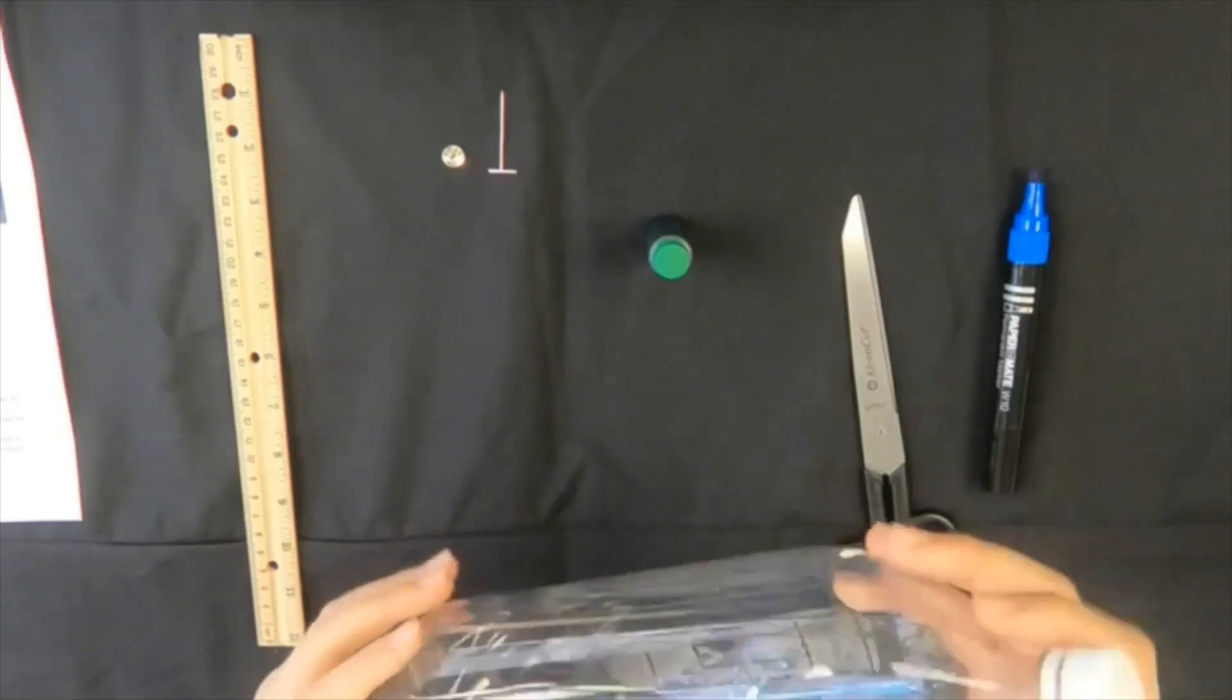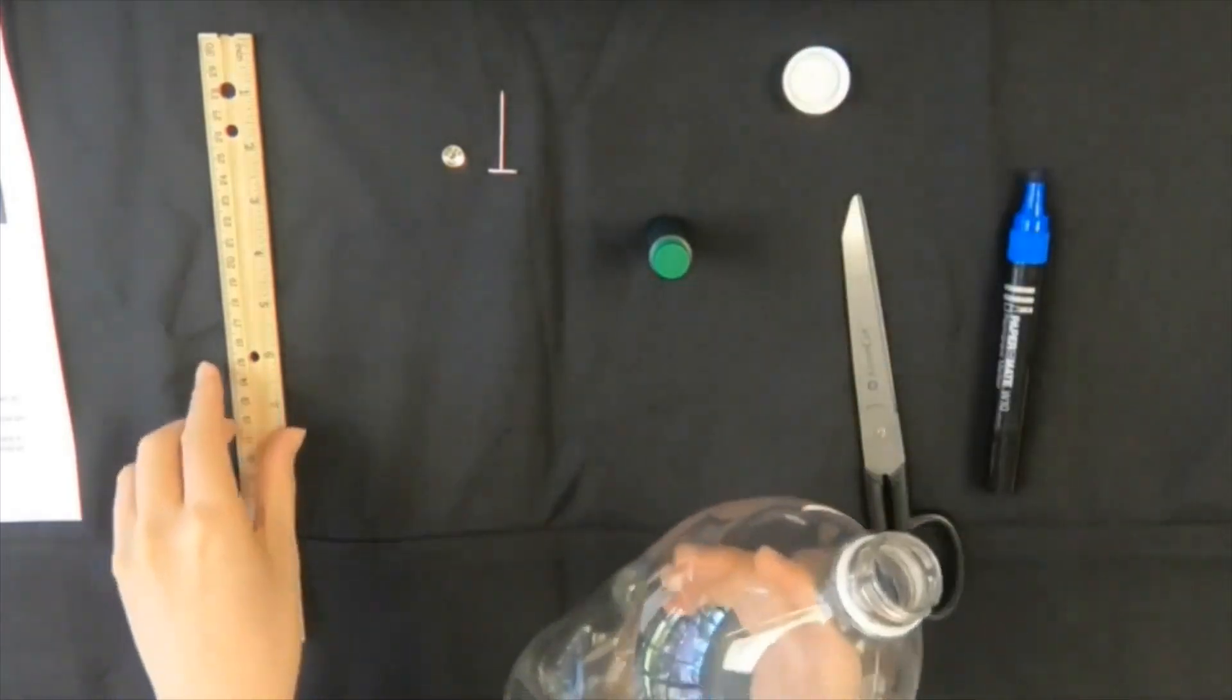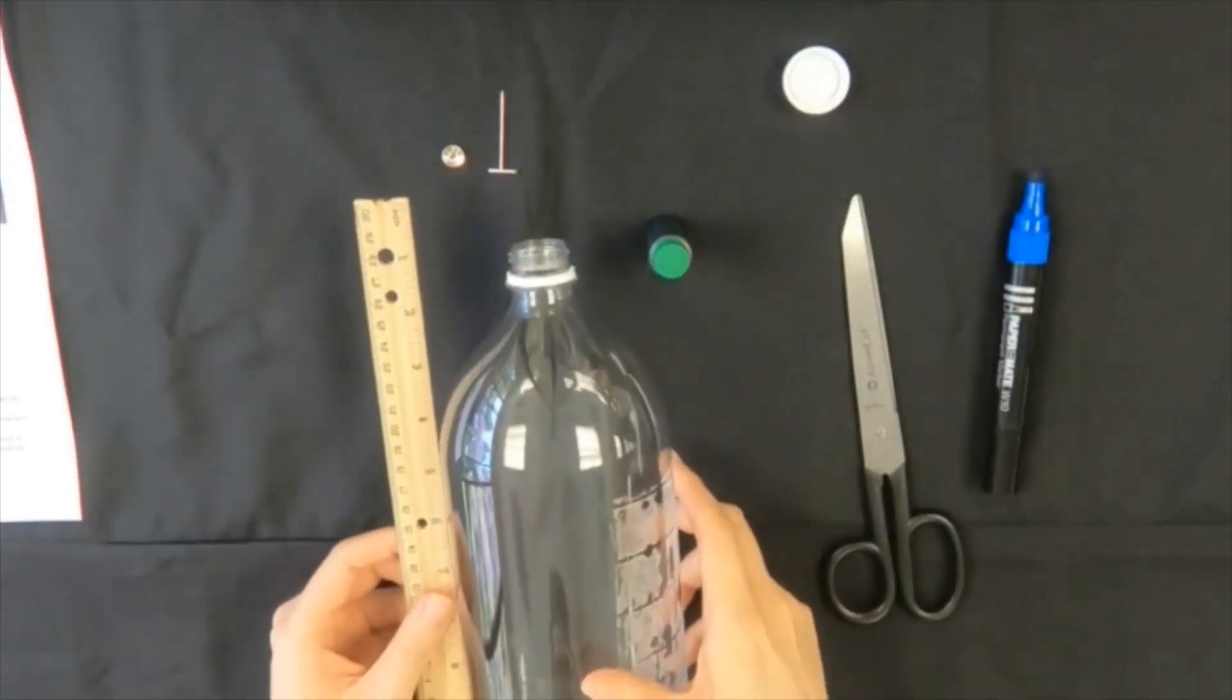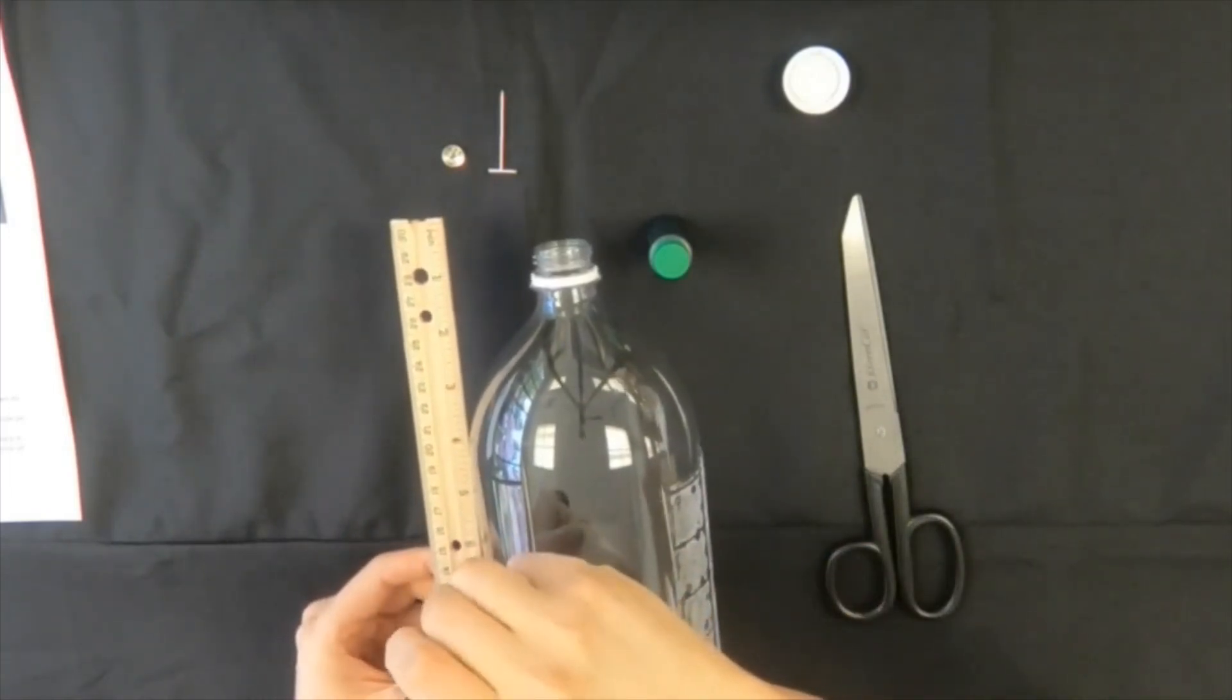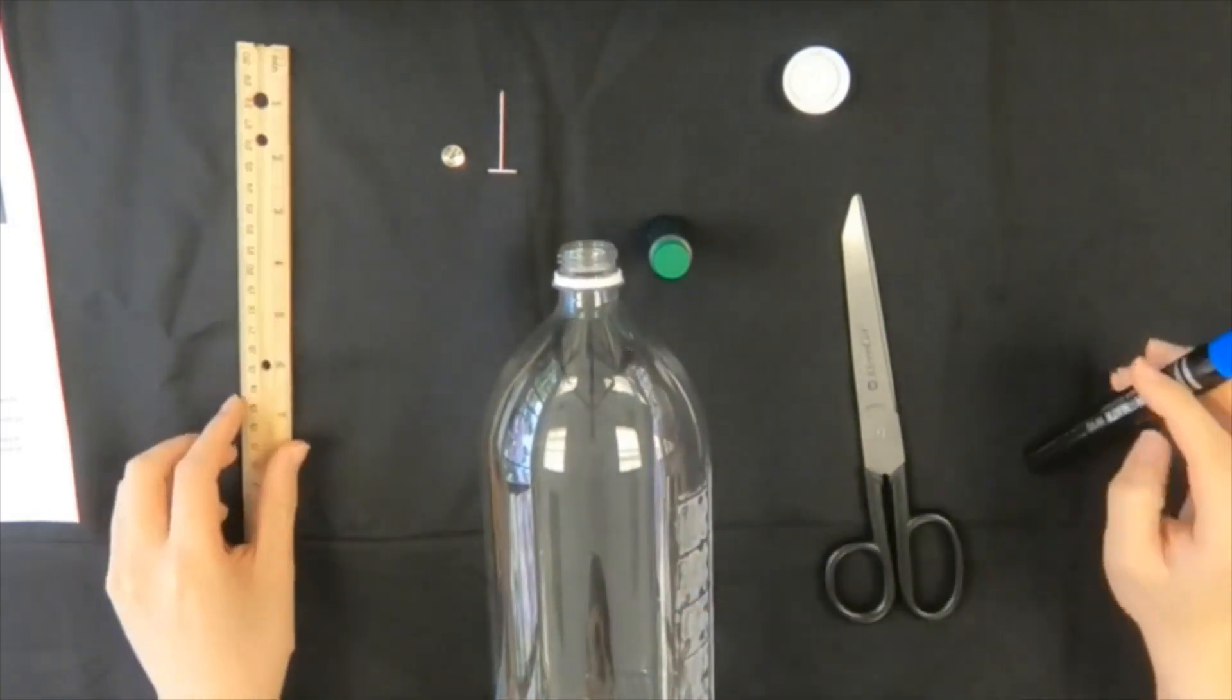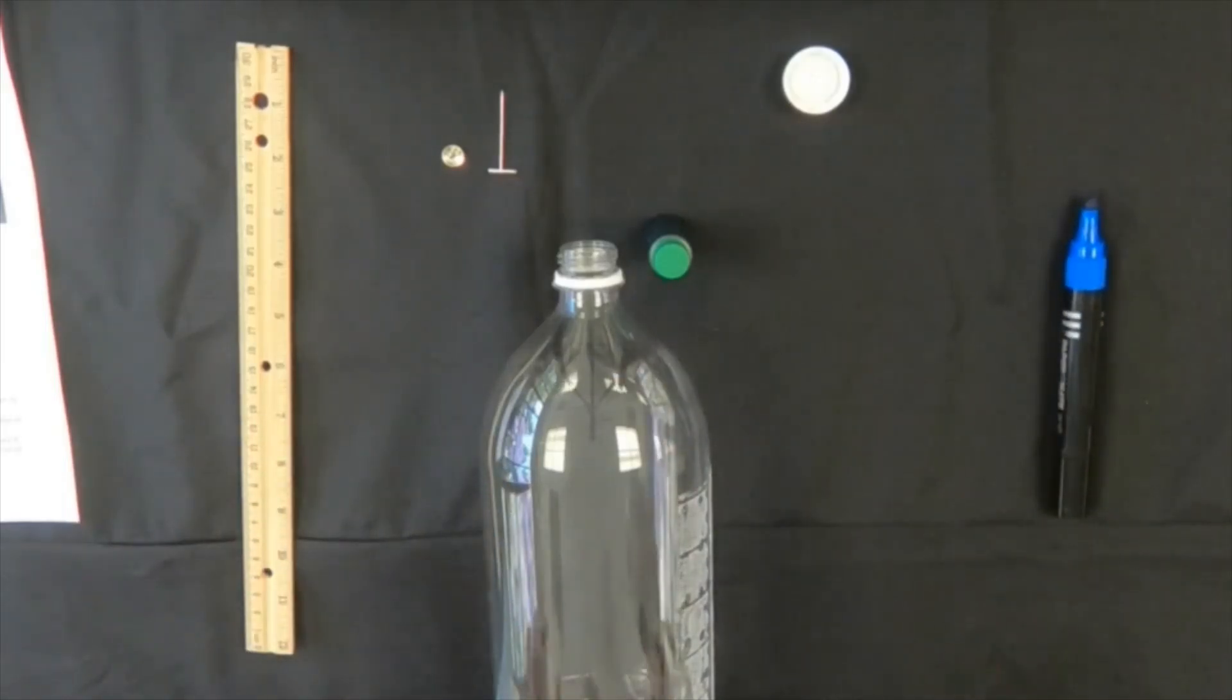First, take your clear plastic bottle and measure it to a point approximately halfway down its length. Use the scissors to cut the bottle carefully in half.